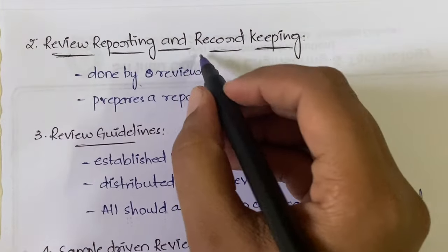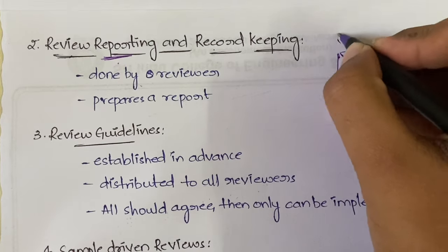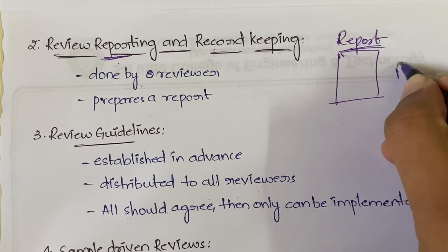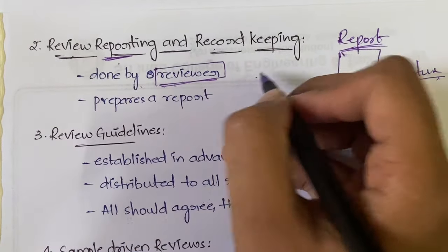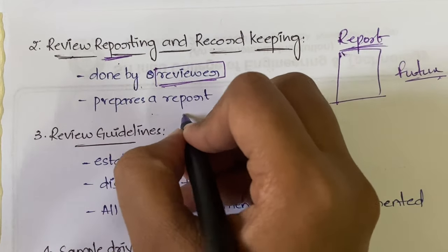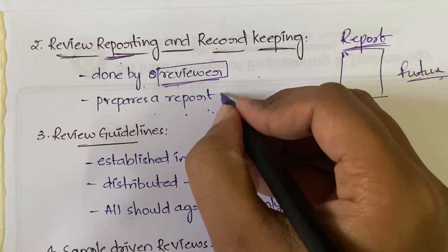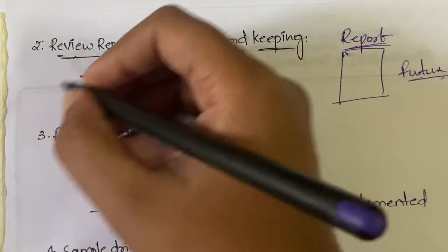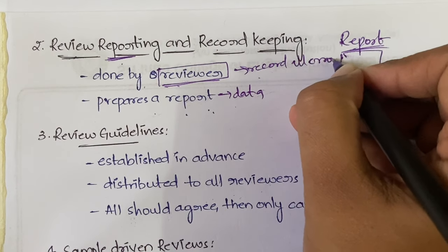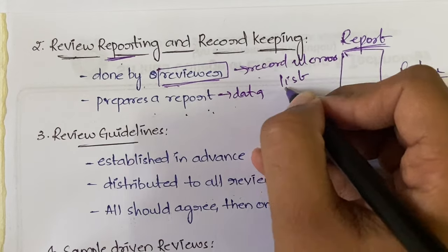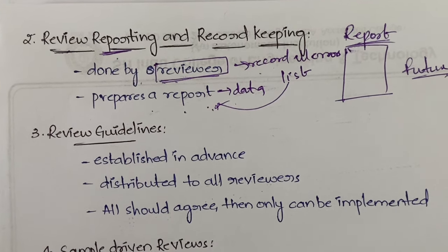The second step is review reporting and record keeping. A report is prepared and maintained for future use. This is done by a reviewer — also called a recorder. During the review meeting, the recorder records all the issues and errors encountered, prepares a list, and from that list generates a report.